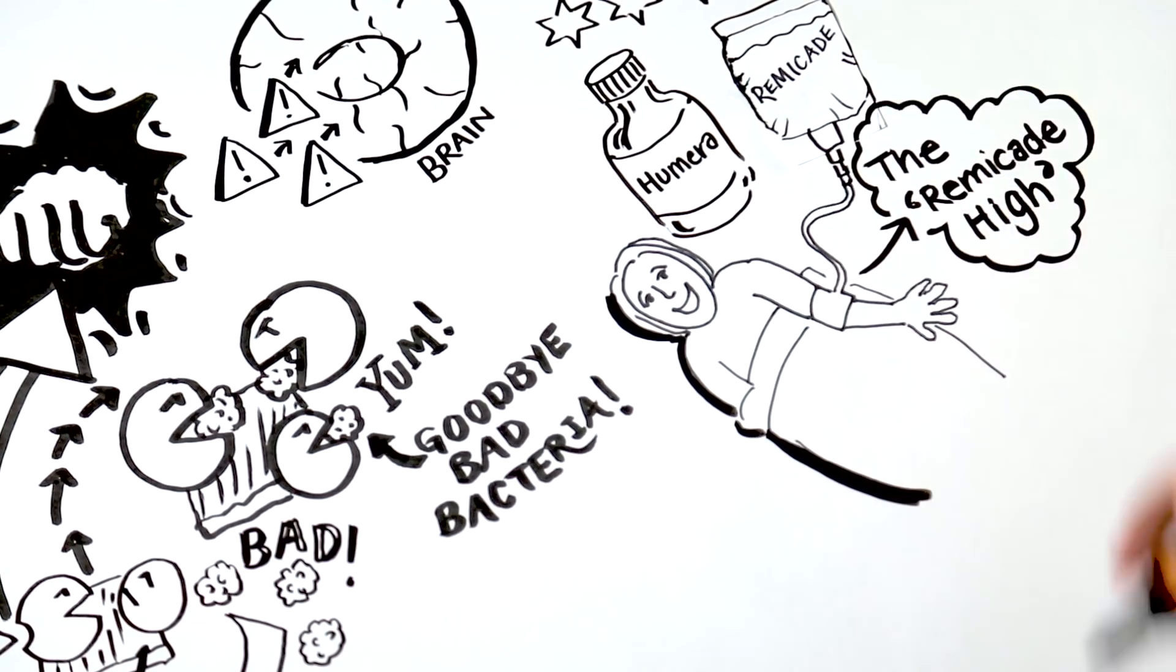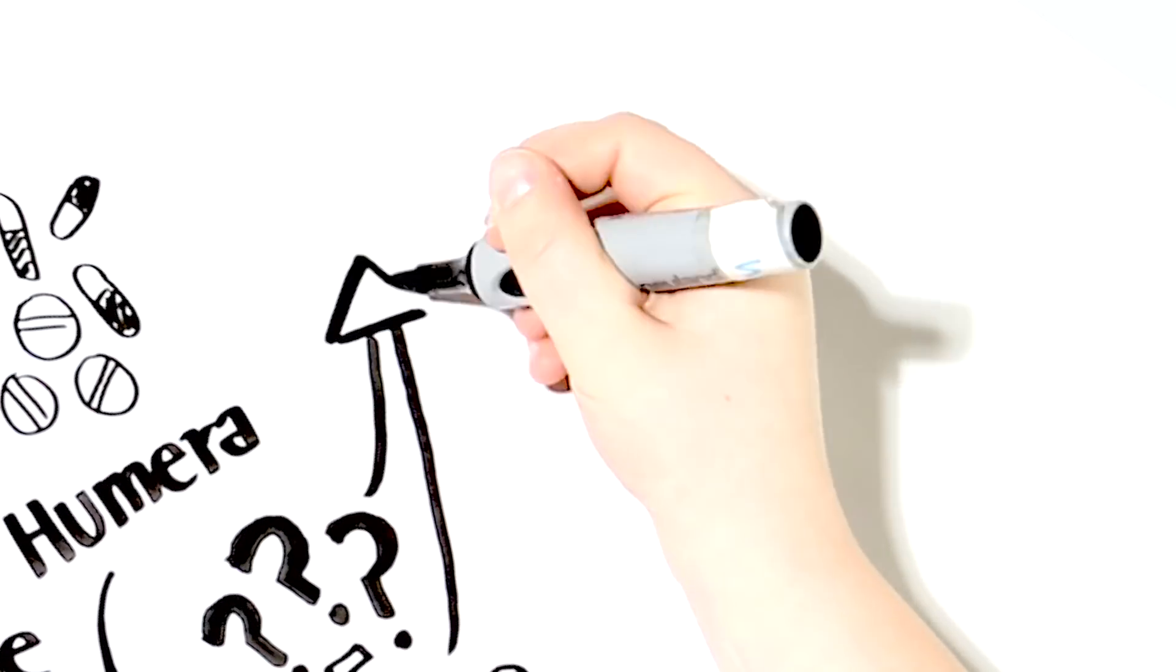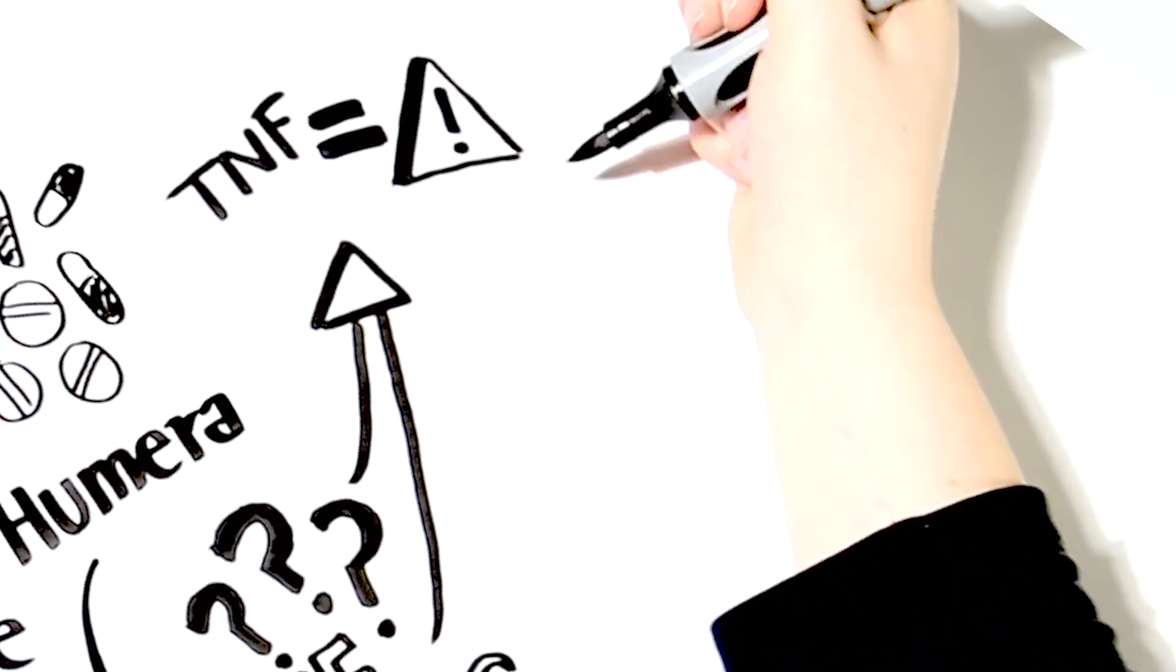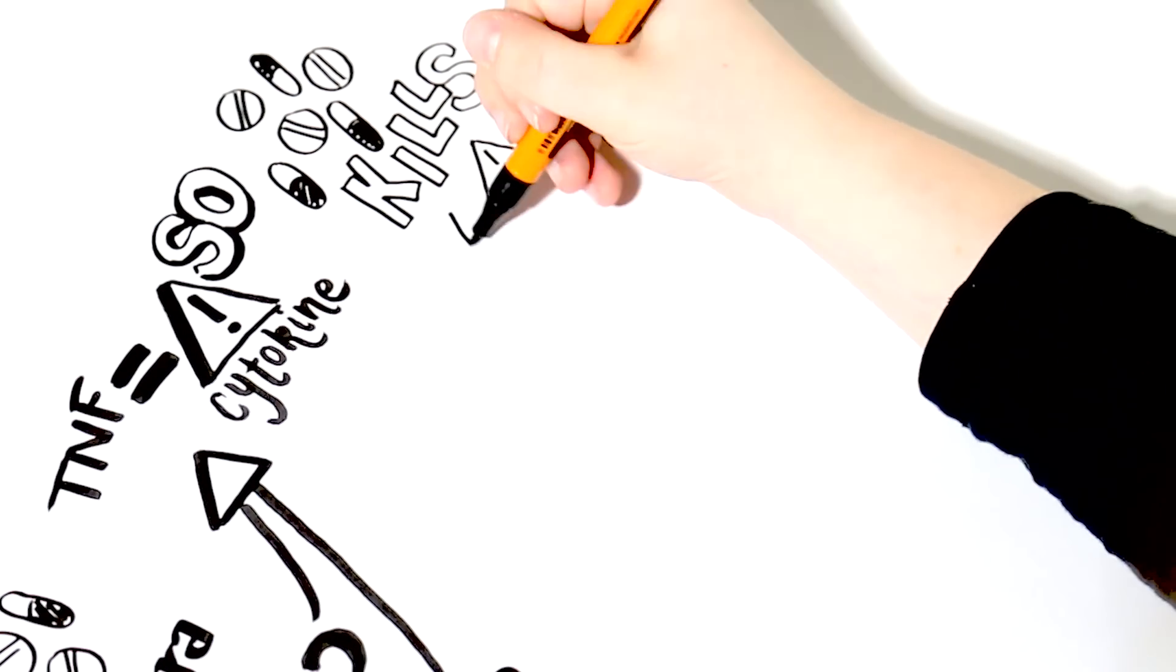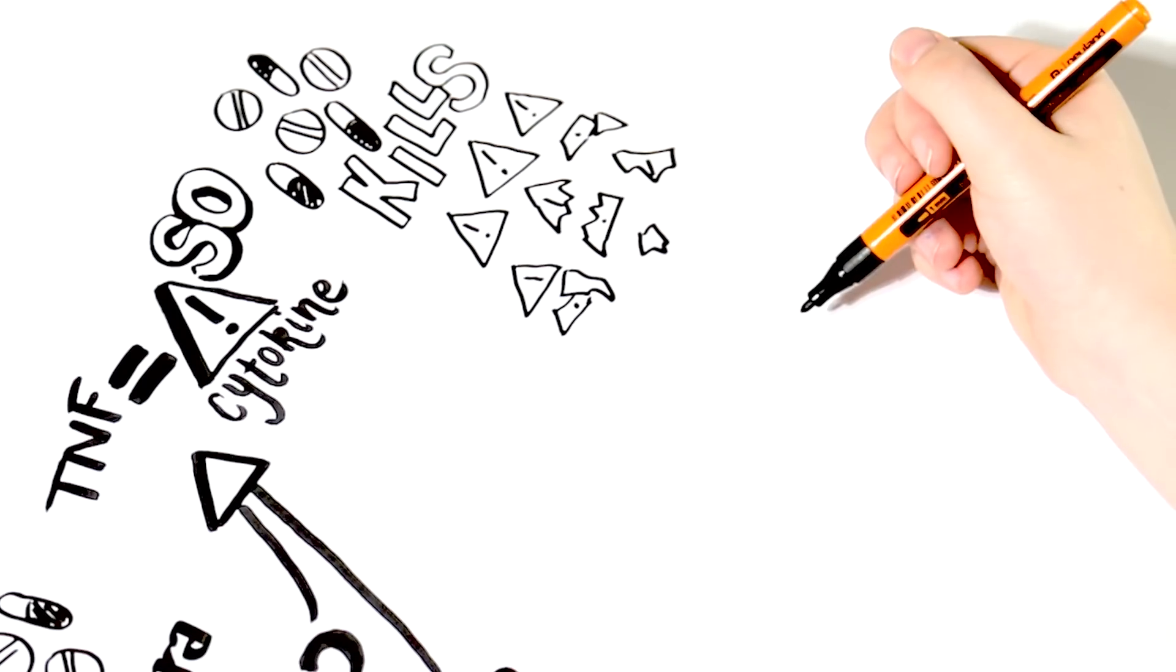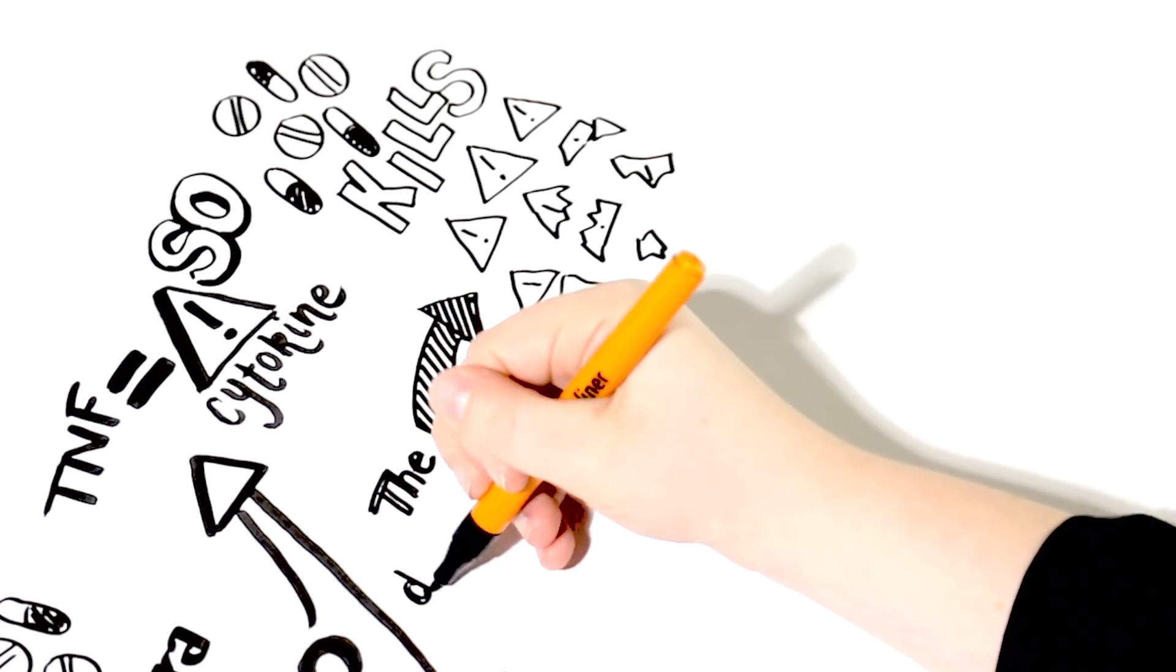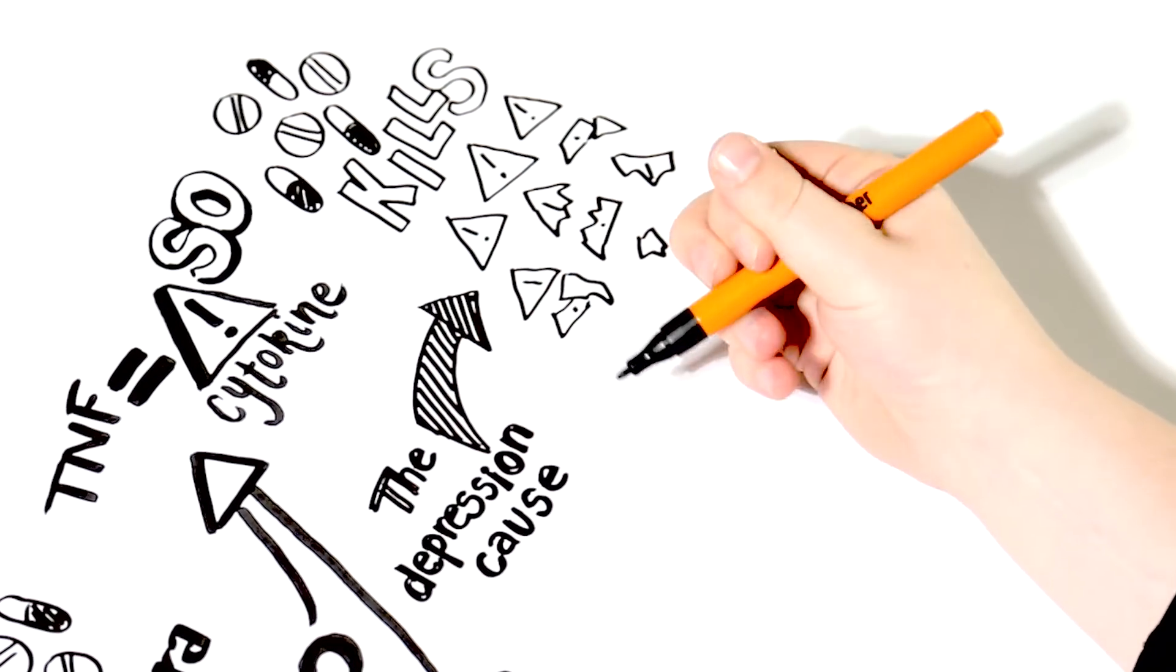How does this happen? Anti-inflammatory drugs will often reduce the levels of cytokines in circulation, and so they may be able to stop inflammation in the body from being communicated to the brain, and so block the adverse effects of inflammation on mood and behavior.